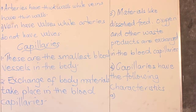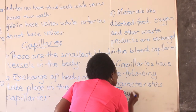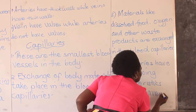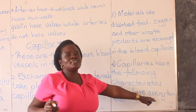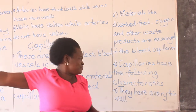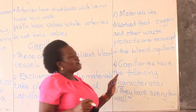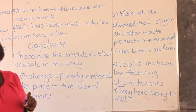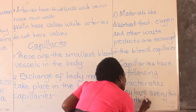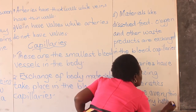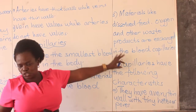The capillaries have the following characteristics. They have a very thin wall which has tiny holes. We use the word 'very' to emphasize the difference — veins have thin walls, but capillaries have a very thin wall. That thin wall has tiny holes, called pores. It is through these pores that the exchange of body materials takes place.